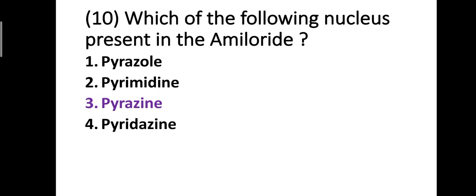Question number ten: which of the following nuclei are present in amiloride? Option one: pyrazole, option two: pyrimidine, option three: pyrazine, option four: pyridazine. The correct answer is option three — pyrazine nucleus is present in amiloride.